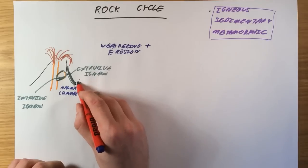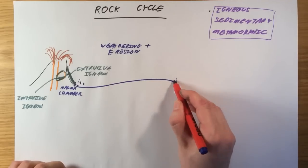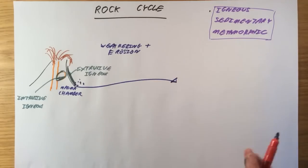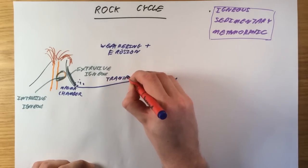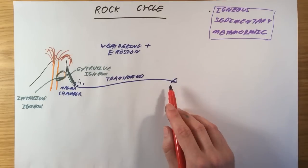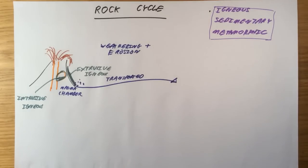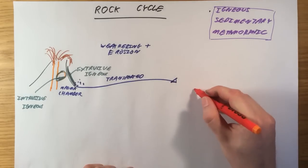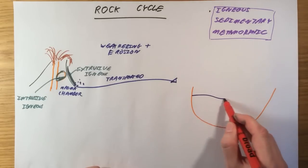So, what can happen is our rock can get broken down into small fragments or sediments, and they can get transported by rivers, by ice and glaciers, or by the wind. And they can get transported from the volcano, from where the igneous rock is found, and eventually they will reach seas.